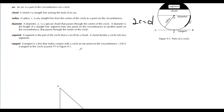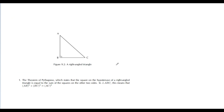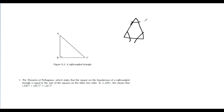Moving on — some revision: the theorem of Pythagoras that everyone knows. In a right-angle triangle, the square of the hypotenuse is equal to the sum of the squares of the other two sides. This theorem is going to be very popular in circle geometry. You must have a right angle — if a triangle has no right angle, you cannot use this theorem.